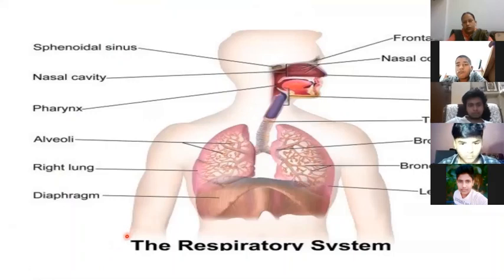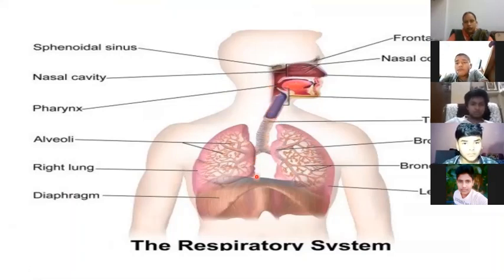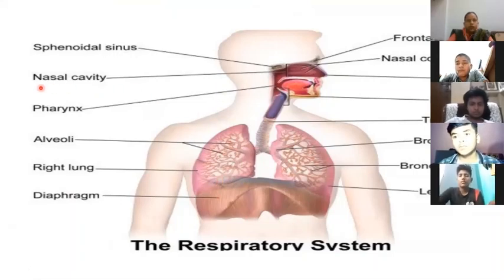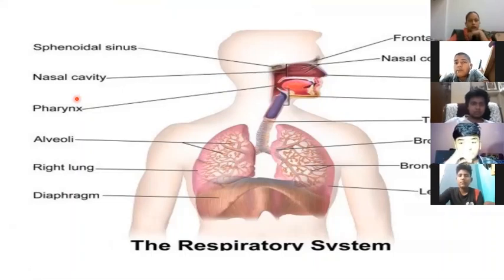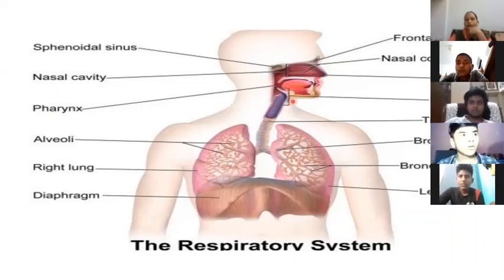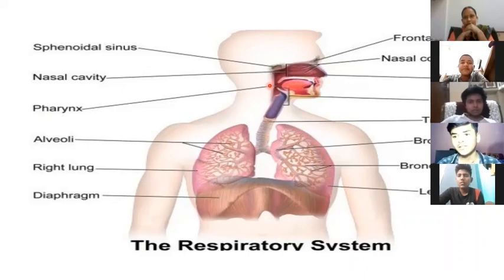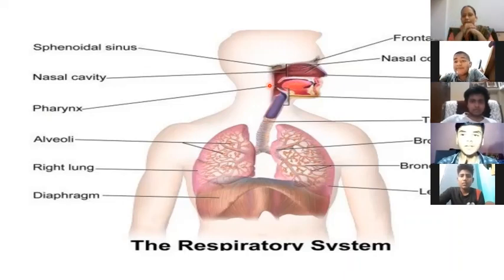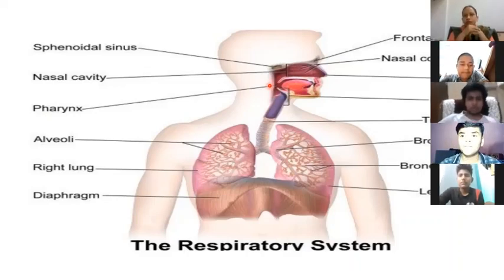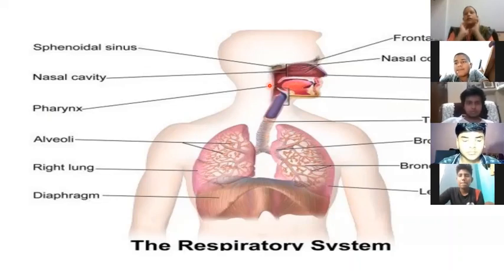The last topic of respiration is the human respiratory system. We start with the nasal cavity. Below that is the pharynx, which is a funnel-shaped structure located at the start of the neck region. The pharynx has two tubes: the windpipe and the food pipe.